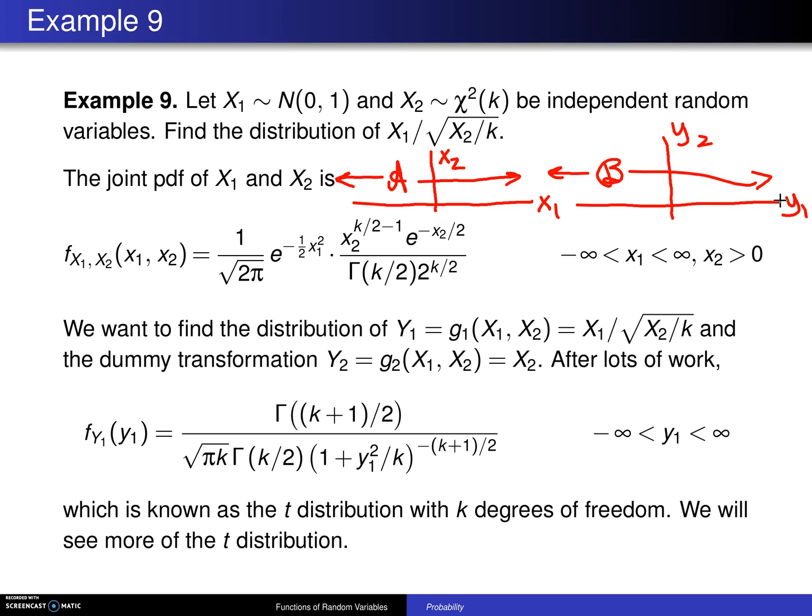So once you have established that, you also establish that this is a one-to-one transformation, and the joint PDF of X1 and X2 will be the normal 0-1 portion, right here, and the chi-squared k portion, right here. They multiply, of course, because they are independent random variables.